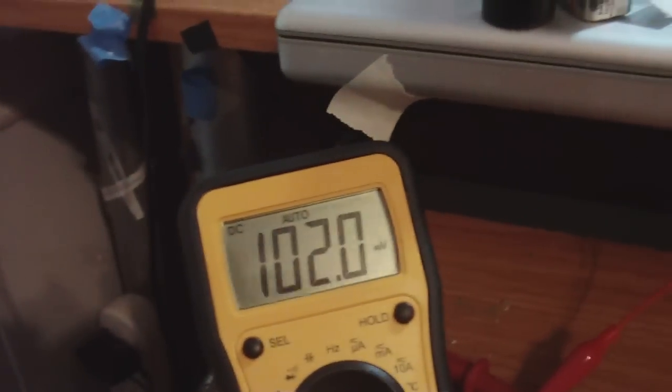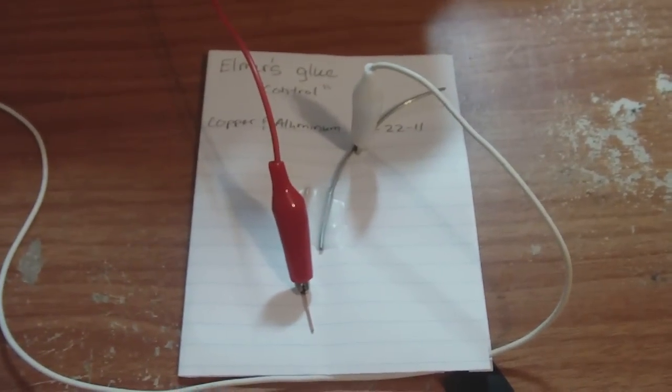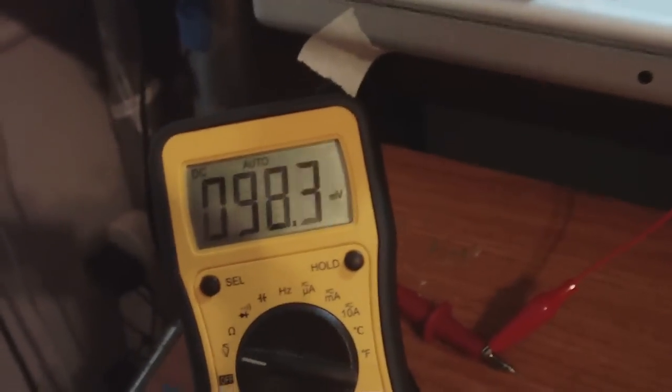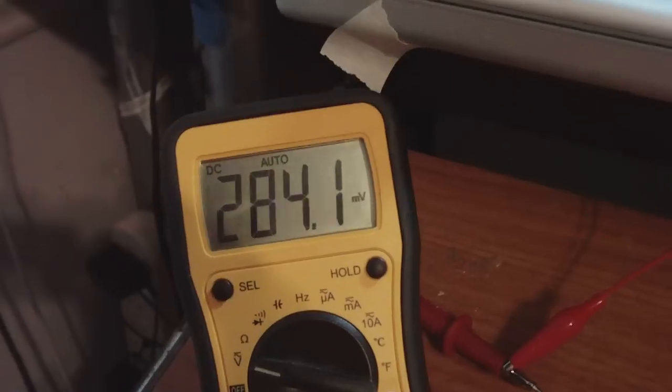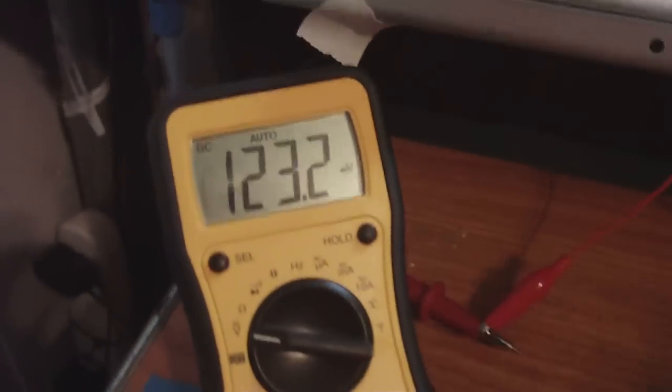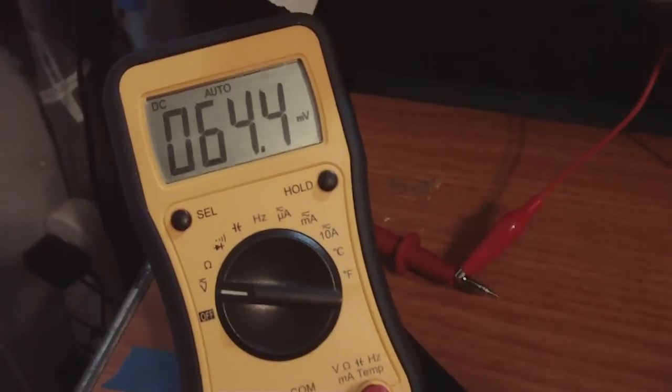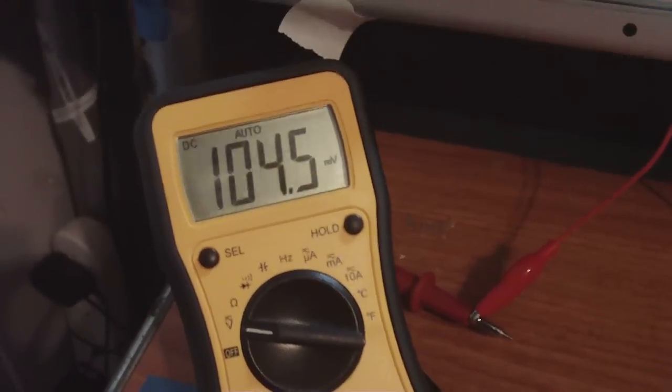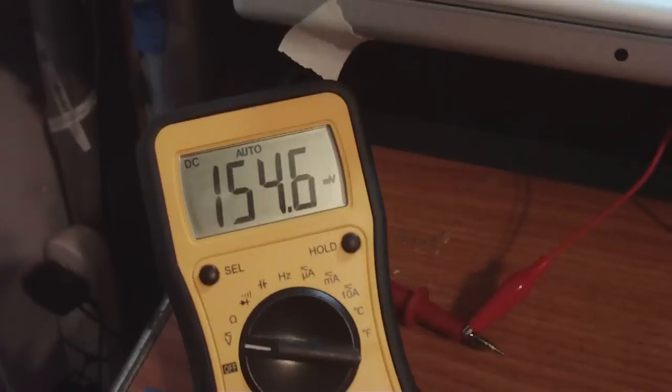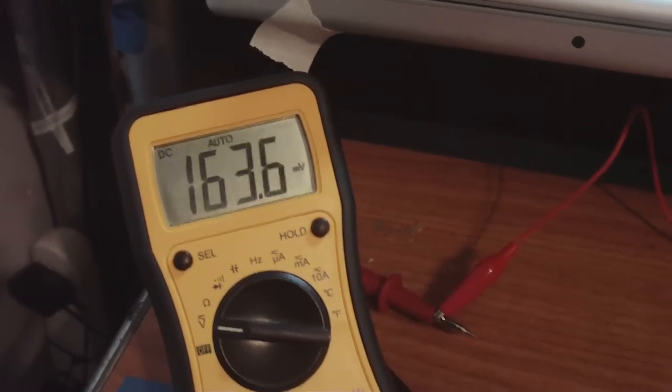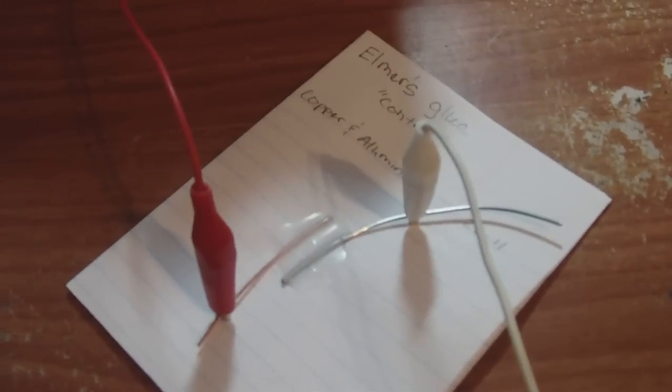As you can see, that's the voltage coming off that single glue cell. Yeah, she fluctuates crazy. Let's see if I can make it any better. There we go. Some heavy fluctuation from just Elmer's glue and two different metals.